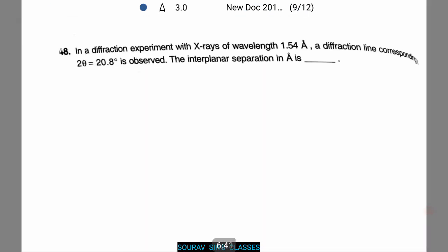Now we have a diffraction experiment. In this experiment with x-rays of wavelength 1.54 angstrom, a diffraction line corresponds to 2 theta which equals 20.8 degrees is observed. Now we need to find the interplanar separation in angstrom.